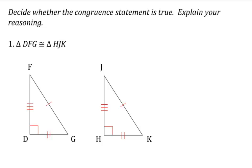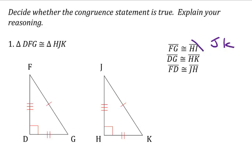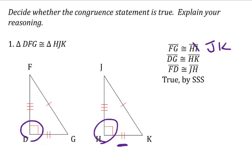Let's try a problem: decide whether the congruence statement is true and explain your reasoning. They say triangle DFG is congruent to triangle HJK. We have right angles and three congruent sides: FG is congruent to JK, DG is congruent to HK, and FD is congruent to JH. So we could say this is true by side-side-side. But is there another way? Yes — we have right angles, plus a leg and a hypotenuse that are congruent, so we could also say these triangles are congruent by hypotenuse-leg.